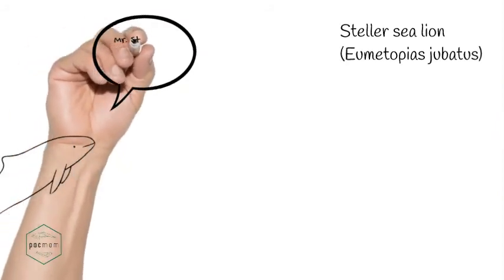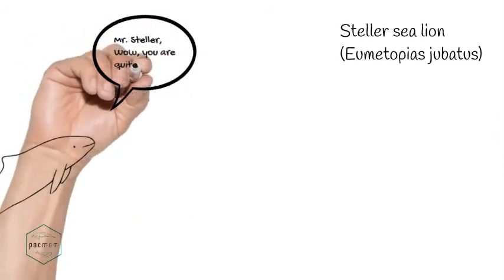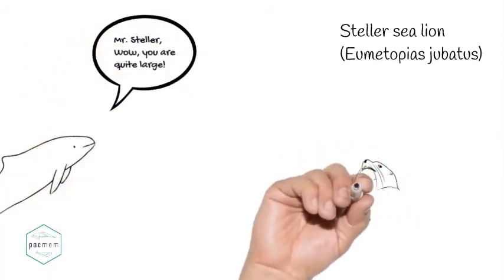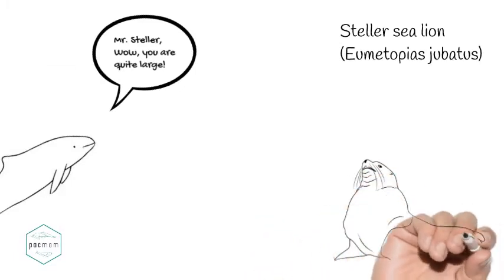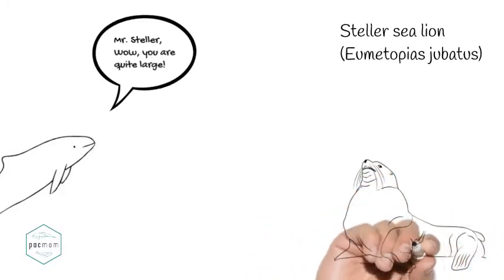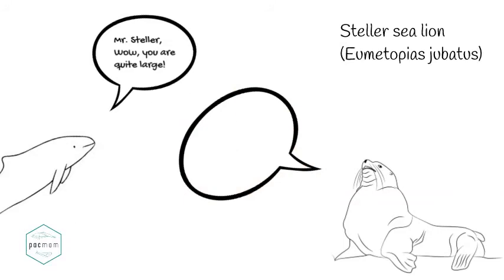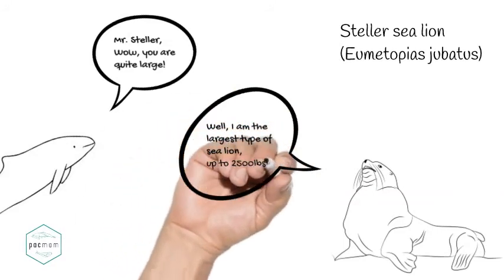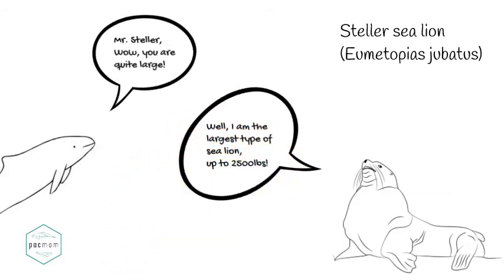The Steller sea lion is the largest of the sea lions, or eared seals, measuring up to 11 feet, weighing up to 2,500 pounds, and living 20 to 30 years. When these guys speak, it sounds more like a roar than a bark. Males look very lion-like, with long, coarse hair on their chest, shoulders, and back, which are more massive and muscular than females.